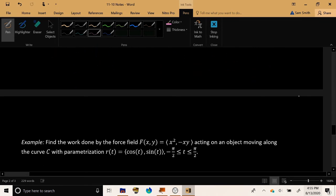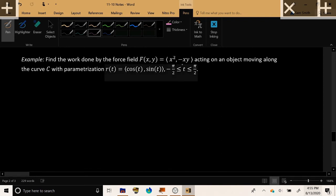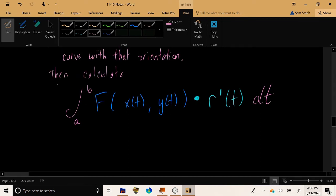So let's do a quick example to make this concrete. Find the work done by the force field F(x,y) equals in the first component x², in the second component -xy. Find the work done by that force field acting on an object moving along the curve with parameterization R(t) = (cos t, sin t) for t running between -π/2 and positive π/2. Well, this is just grand because someone else has not only decided how their curve should be oriented, but also they have decided on the parameterization that they want to use. Which means it just remains for us to fill in the blanks of this formula that we gave above and then to calculate the value of this integral.